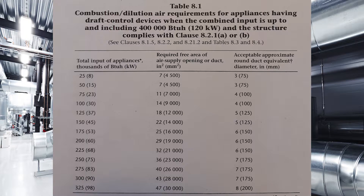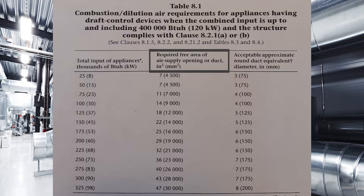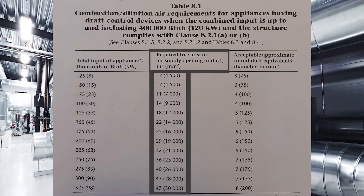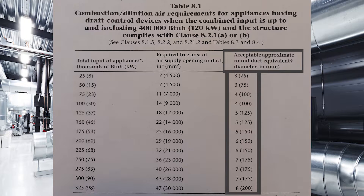Note how both tables are laid out. The far left column shows total input of appliances in thousands of BTUs per hour (or kilowatts). The middle column shows required free area of the air supply opening or duct in inches squared or millimeters squared. The next column shows acceptable approximate round duct equivalent diameter in millimeters and inches. For these videos I'm going to be using BTUs and inches, but the table works the same way with kilowatts and millimeters.